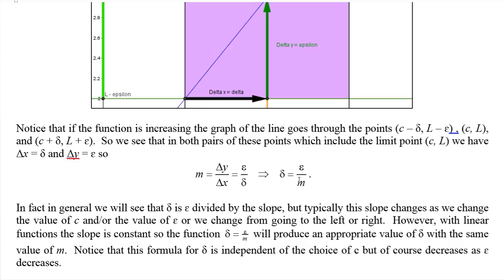And notice that this is actually independent of whatever we choose for c. But of course, it does depend on what we choose for epsilon. And of course, the smaller we make epsilon, the smaller we make delta, which is always the case.